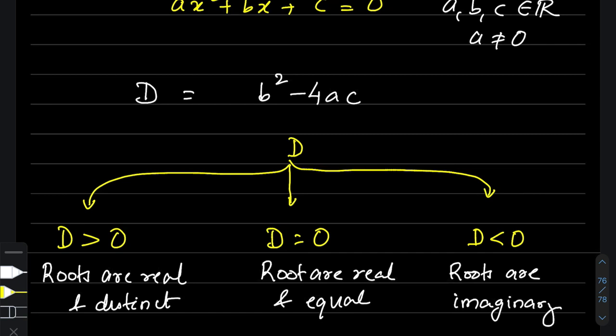One more thing to add: if the coefficients of the quadratic equation are all real numbers, then the two imaginary roots will be conjugate pairs of each other. So if one root is of the form P + iQ, the other would be of the form P − iQ. I hope this information is useful to everybody watching.